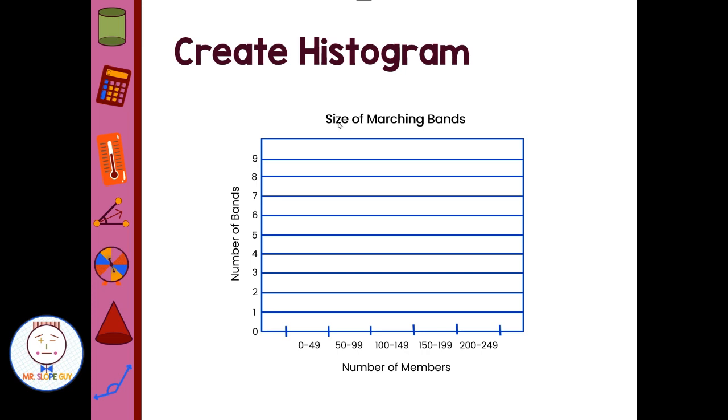So we want a title. We have size of marching band. Then we're going to have our bin system, 0 to 49, 50 to 99, 100 to 149, 150 to 199, 200 to 249. So they're even intervals and they're even intervals that are not overlapping. There's not one band that's in two different categories. So each of them have their own category or their own bin to be in.